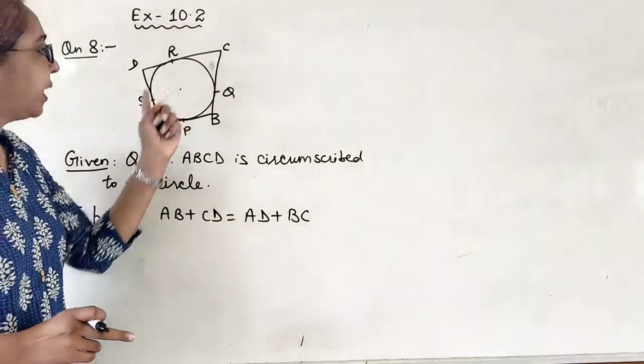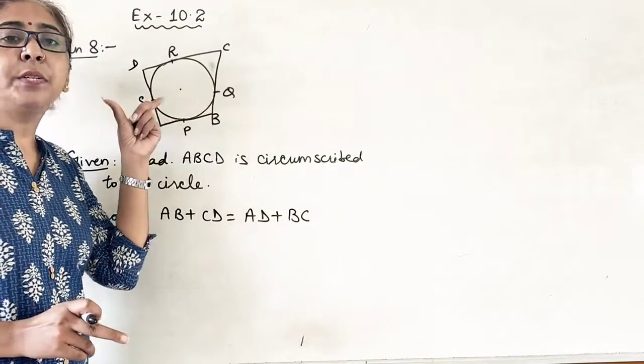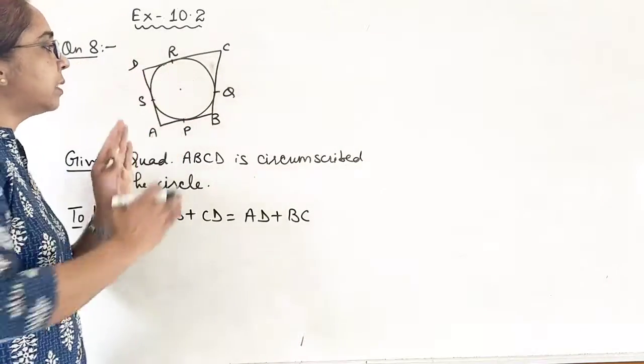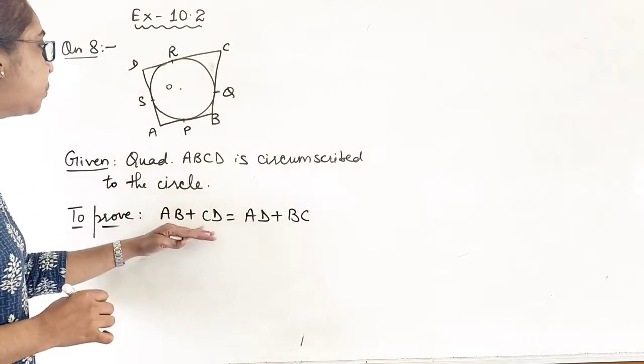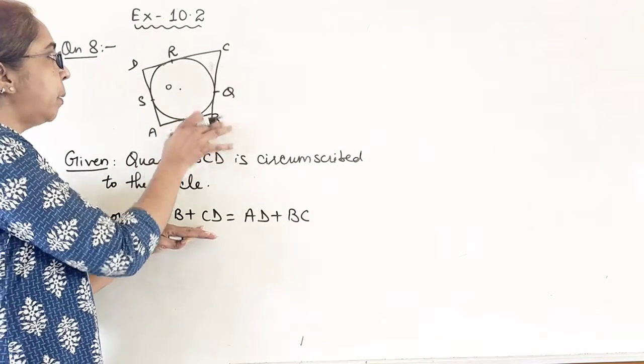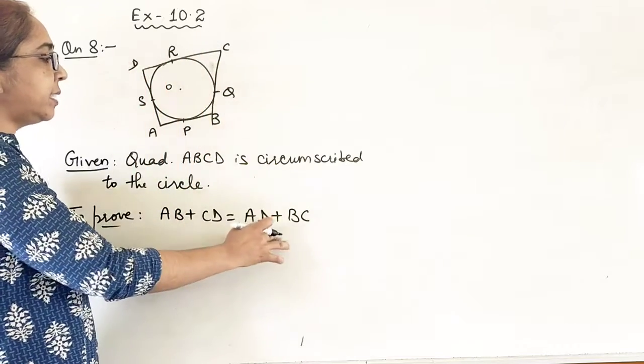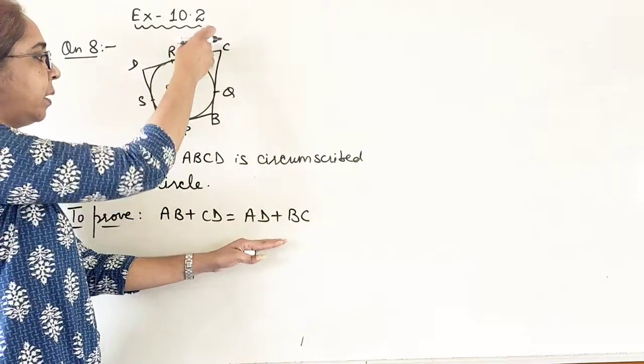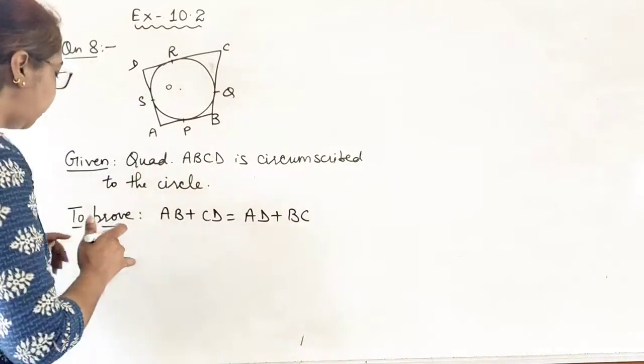Here it is given that ABCD is a circumscribed quadrilateral to the circle. Let us say the circle with center O. And we have to prove AB plus CD, this AB plus CD is equal to AD plus BC. This we have to prove.